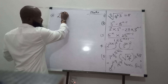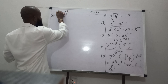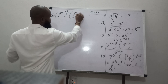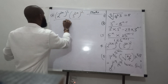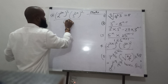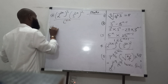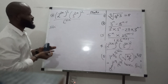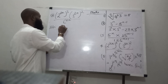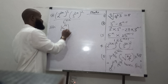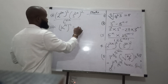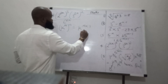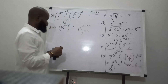Problem 4: 2 raised to the power of 2x, all raised to the power of 3, multiplied by 3 raised to the power of 3x, power 2, divided by 6 raised to the power of 6x. How do we work it out? Remember, the law of indices says that when k raised to the power of n is raised to power m, it gives you k raised to the power of m times n.